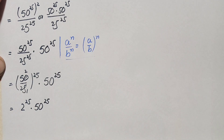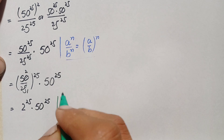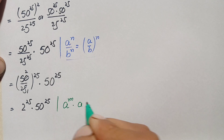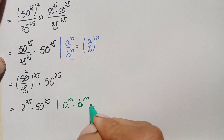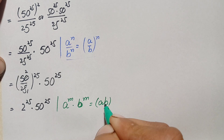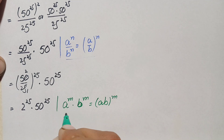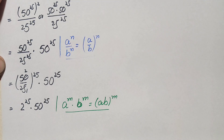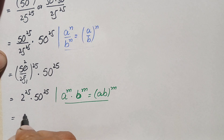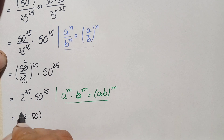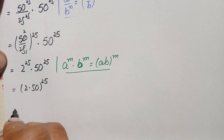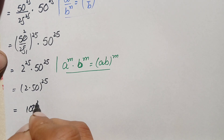We will use the same-power exponential identity: a raised to power m times b raised to power m equals a times b, whole raised to power m. Using this identity, we multiply the bases: 2 times 50 is 100, and write the power once. This becomes 100 raised to power 25.